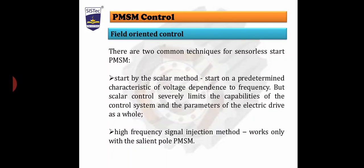The scalar method starts on a predetermined characteristic of voltage dependence on frequency. But scalar control severely limits the capabilities of the control system and the parameters of the electrical drive as a whole. The second method is high frequency signal injection.